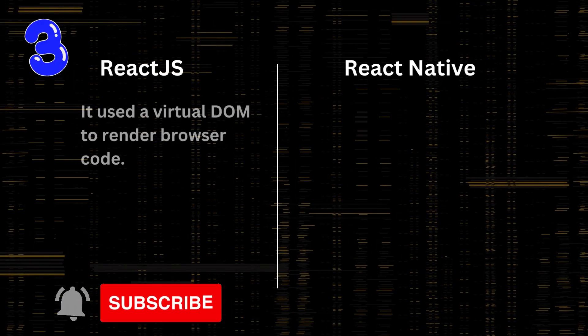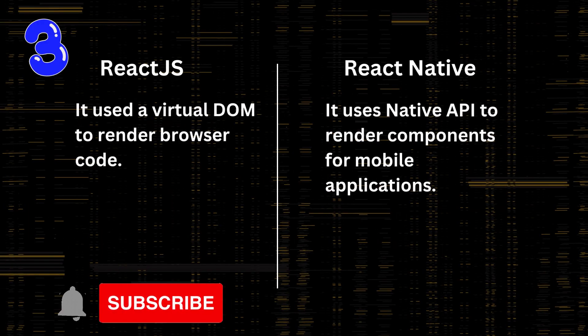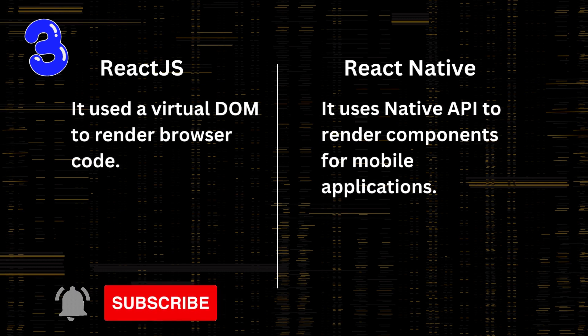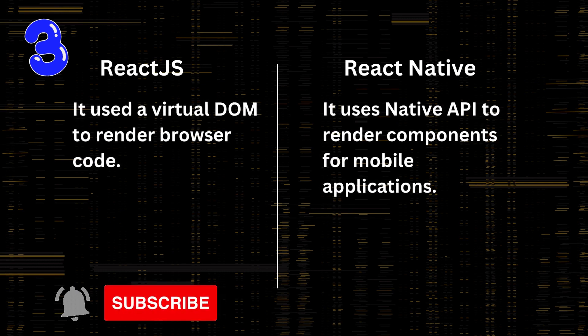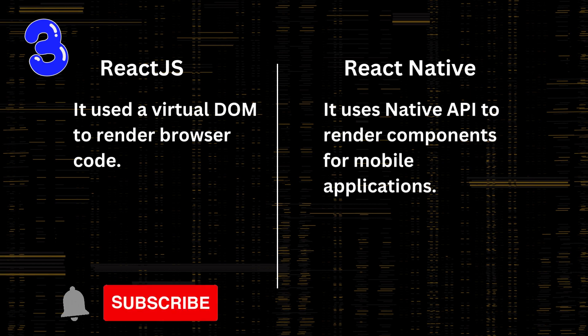Number 3: React.js uses a virtual DOM to render browser code. In React Native, it uses native API to render components for mobile applications.